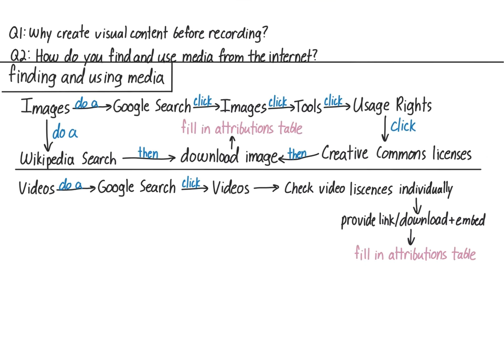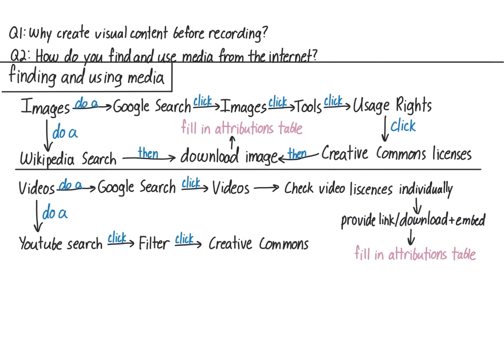YouTube is where most people go for video content, so you can also do a YouTube search. But be wary — there are a lot of low-quality videos out there and some even contain inaccuracies, so it's a good idea to view them with a critical eye. Once you do your search, you can filter your results to return only those licensed under a Creative Commons license. Once you find a video you like, you can provide the link or embed the video and fill in the attributions table.